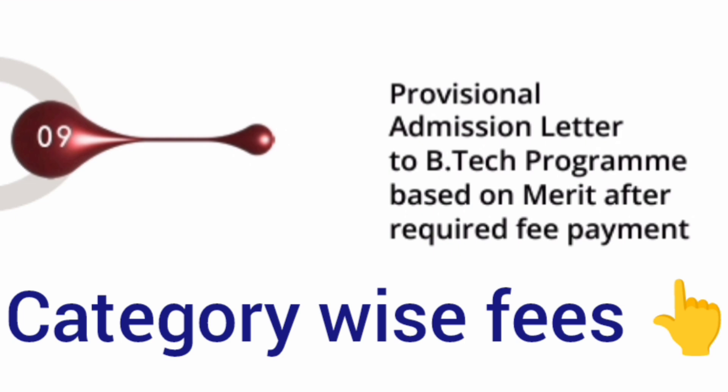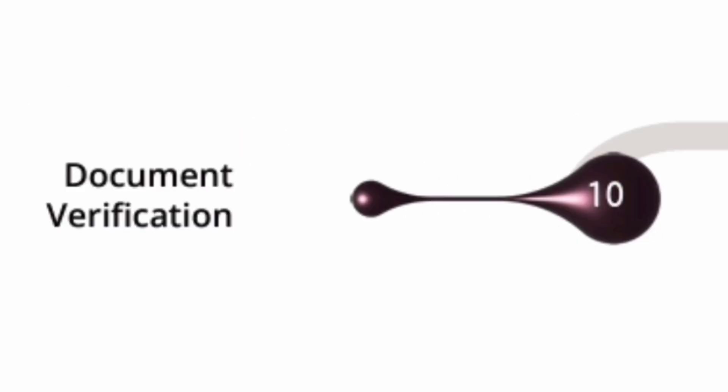After the admission letter, you will have to pay the required fees. Fees payment will be based on category, and details are available via the link in the info button. Step ten is document verification, and after this your admission process will be complete.